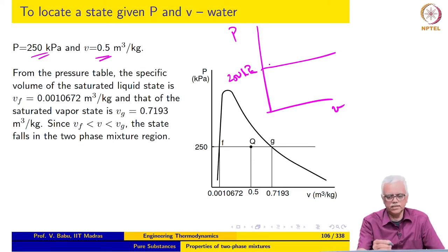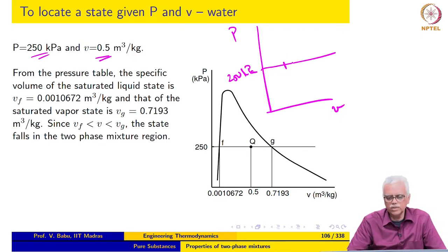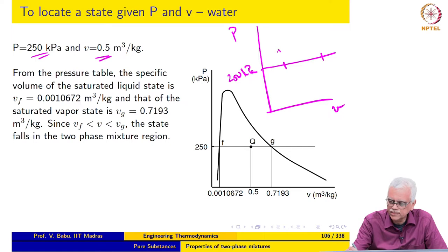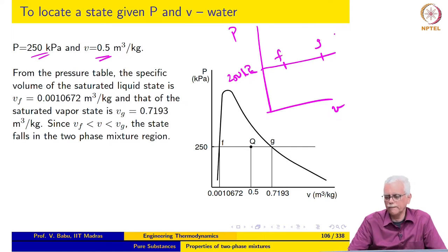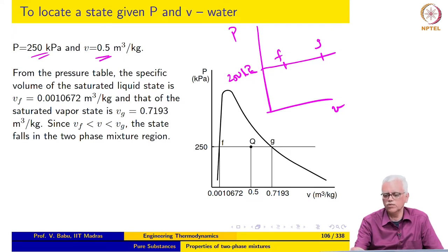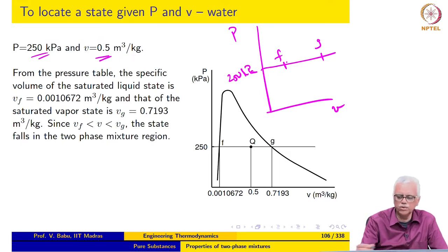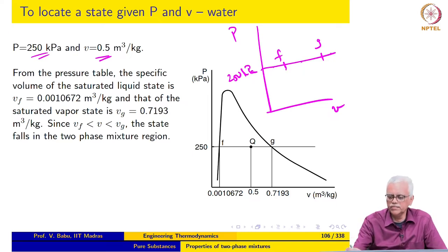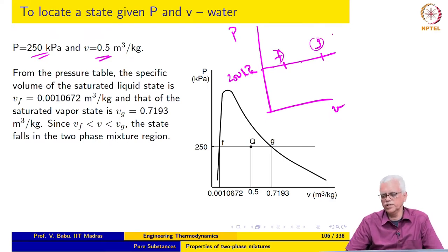What we would like to know is whether the given specific volume is more than the specific volume of the saturated liquid state and less than the specific volume of the saturated vapor state, or more than the specific volume of the saturated vapor state, or less than the specific volume of the saturated liquid state. In other words, we want to know whether the state lies in the compressed liquid, two-phase, or superheated region.